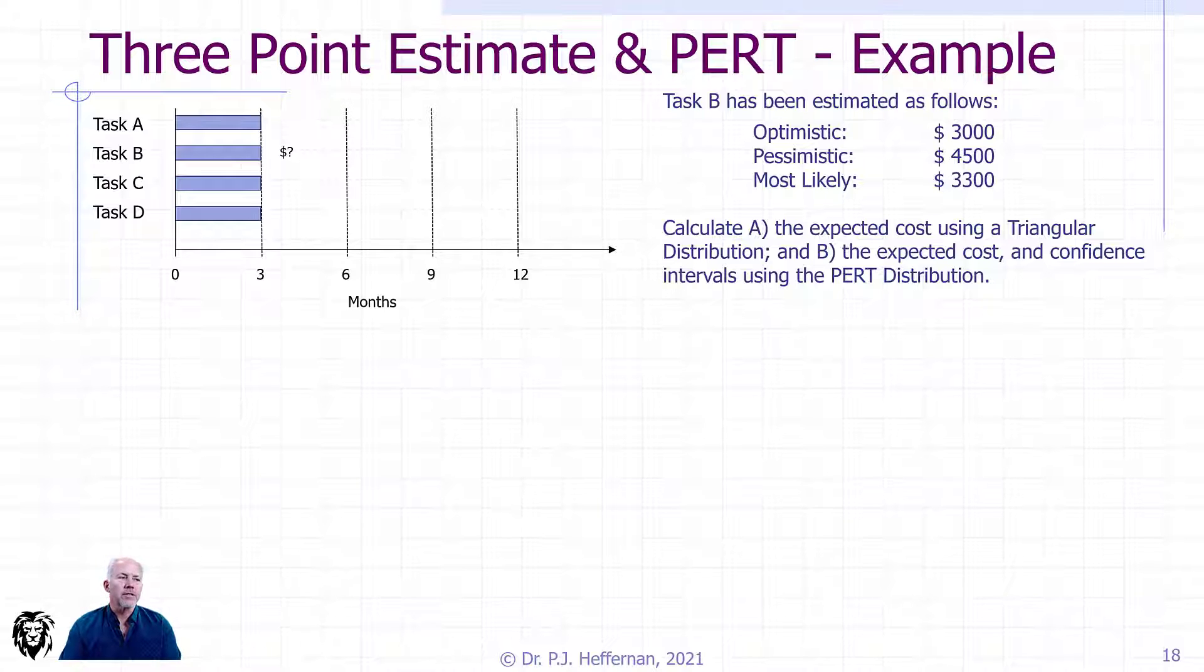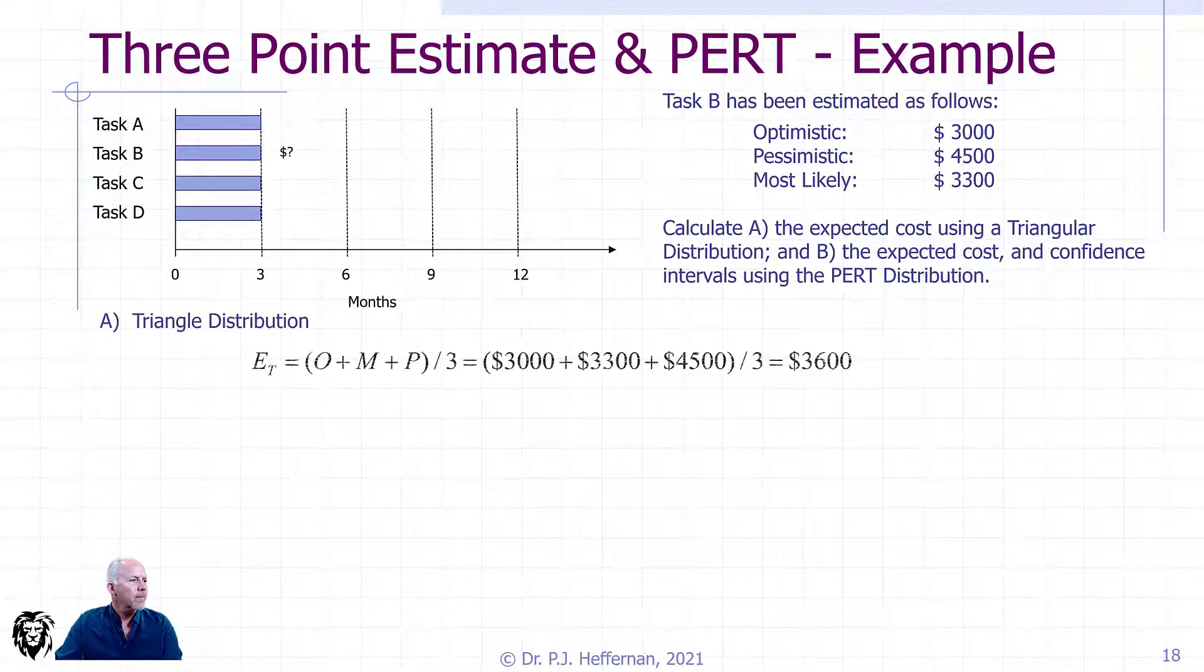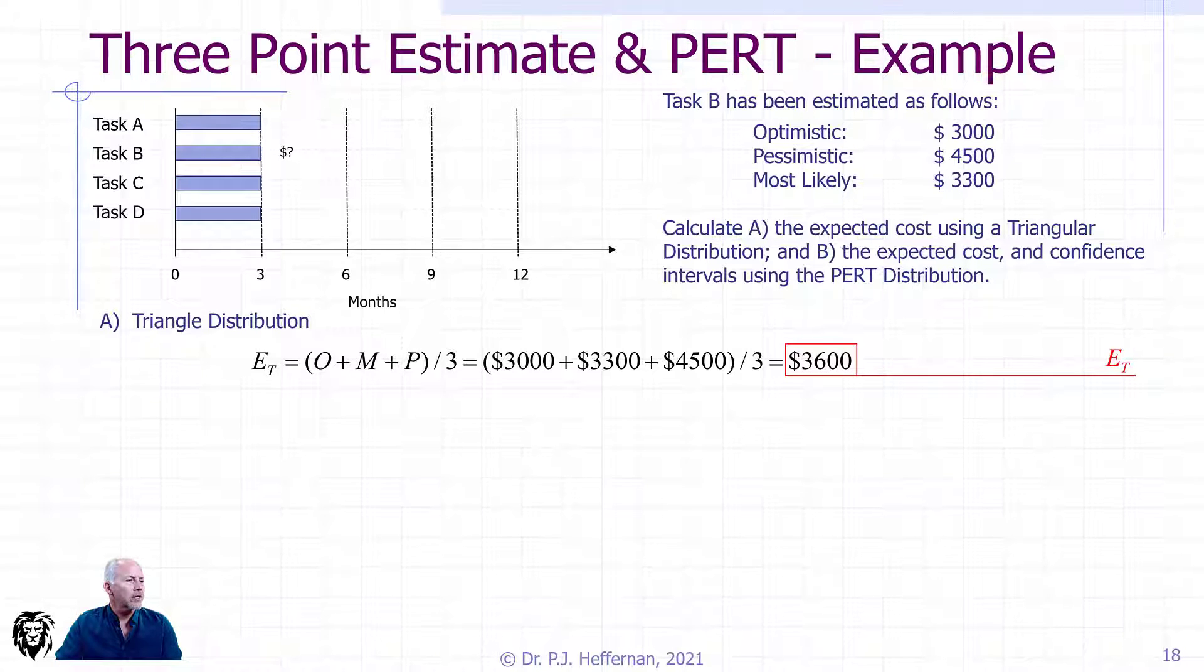What we want to do is use the triangular distribution to estimate what we should be using, and then also use the PERT distribution to do the same thing. Using our triangle distribution, we see it's an unweighted formula. Optimistic plus our most likely plus our pessimistic, add them together, take the mean by dividing by three. And we get an estimate for our task B cost of $3,600 using the triangle method.